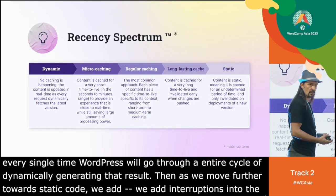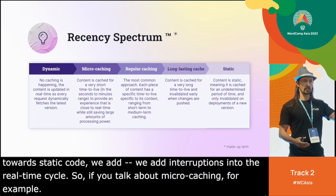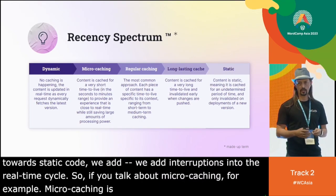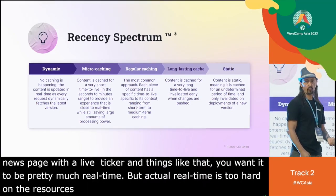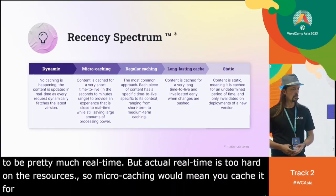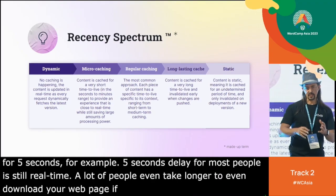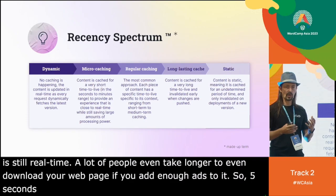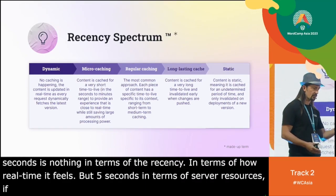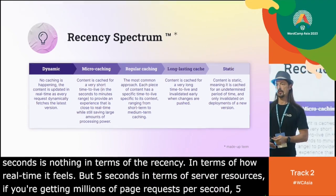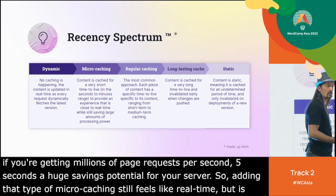As we move further towards static code, we add interruptions into the real-time cycle. Micro-caching is the concept of near real-time. For example, if you have a news page with a live ticker, you want it to be pretty much real-time, but actual real-time is too hard on resources. Micro-caching would mean you cache it for five seconds, for example. Five seconds delay for most people still feels like real-time, but five seconds in terms of server resources — if you're getting millions of page requests per second — is a huge savings potential.